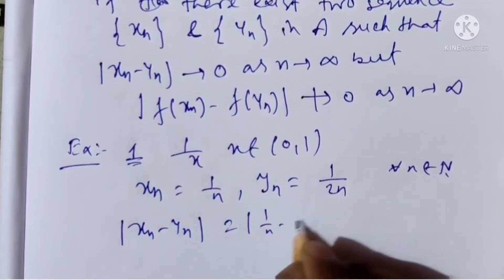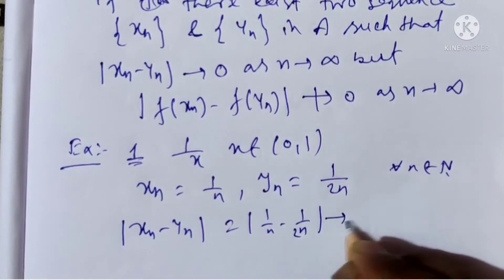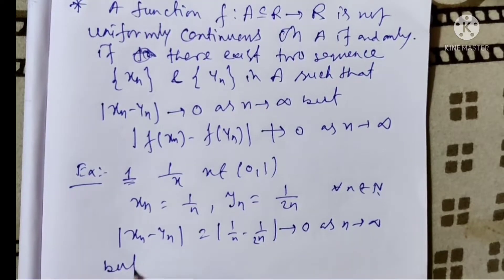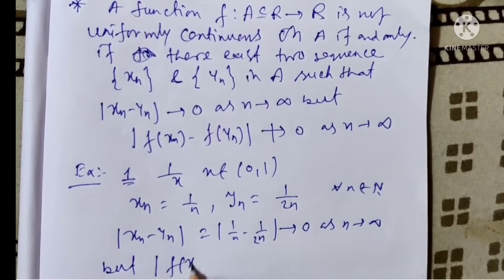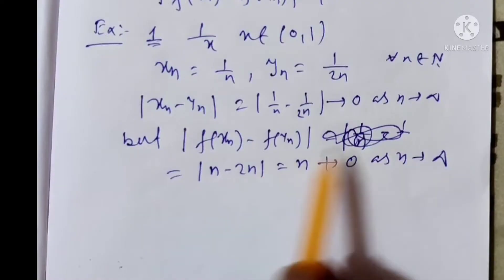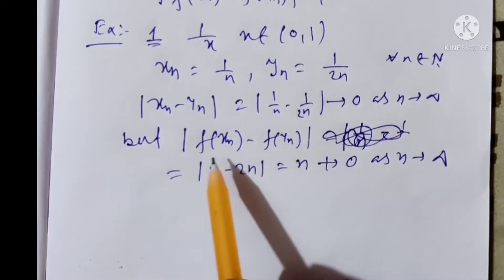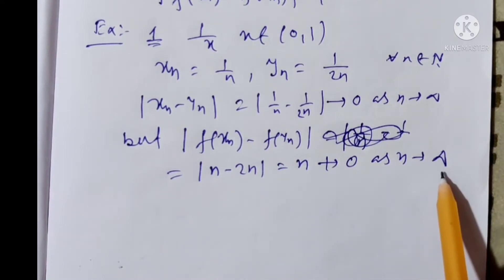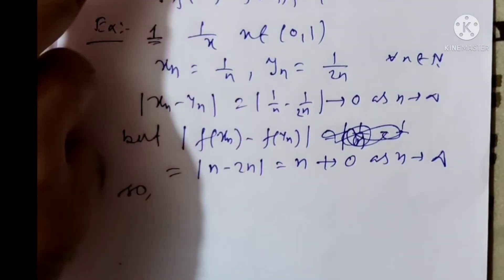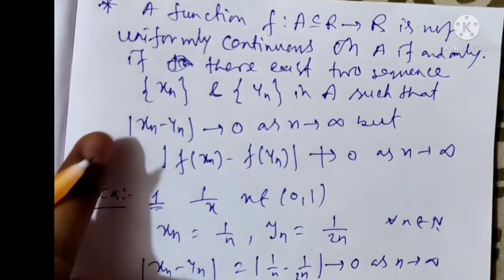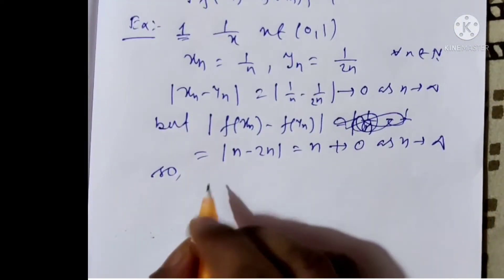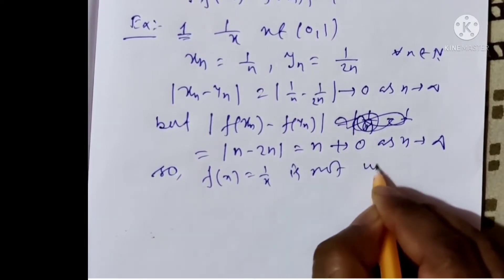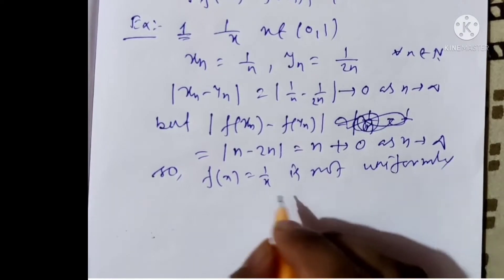So xn minus yn equals 1/n minus 1/(2n), which tends to 0 as n tends to infinity. But f(xn) minus f(yn) equals n minus 2n, which equals n, and does not tend to 0 as n tends to infinity. So by this theorem, f(x) = 1/x is not uniformly continuous.